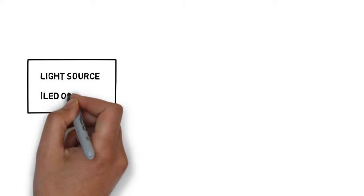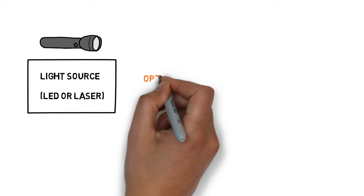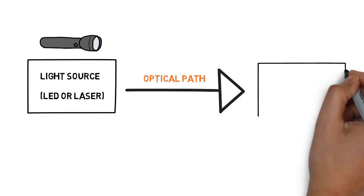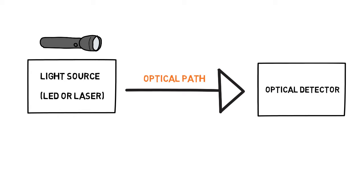As we saw in Chapter 5, light comes from an optical source, travels along the optical path, and is finally received by an optical detector at the transmitting end.